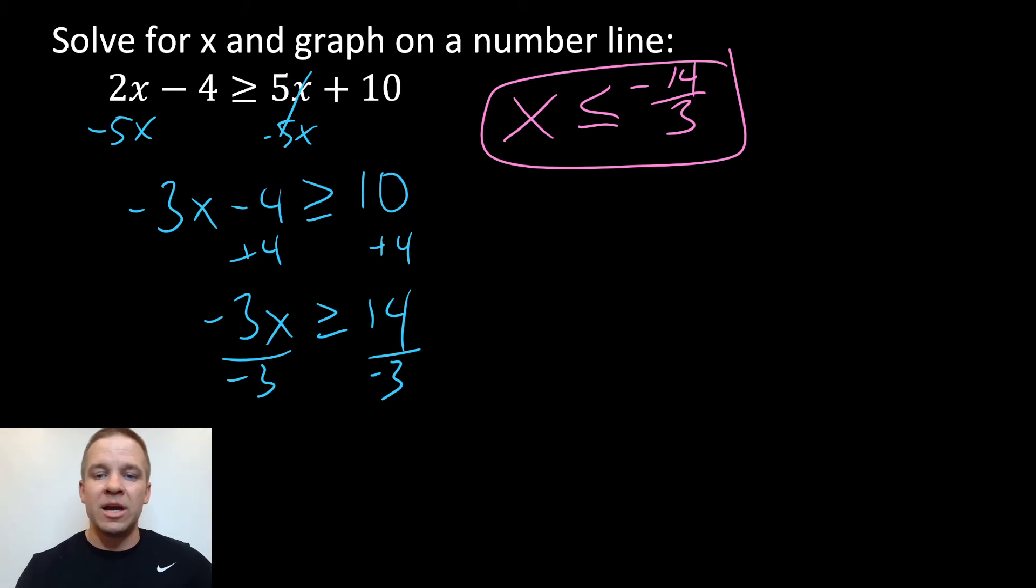But I also need to graph this thing on the number line, right? Alright, so if I'm graphing this, I'm going to have 0 right here. And then I'm going to go to negative 14 over 3. That's like negative 4.6 repeating, right? Negative 4 and 2 thirds. Okay, so we're going to be over here. But really, as long as I'm in the negative and I'm away from 0 a little bit, I think we're pretty good there.